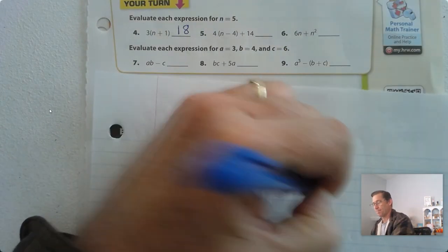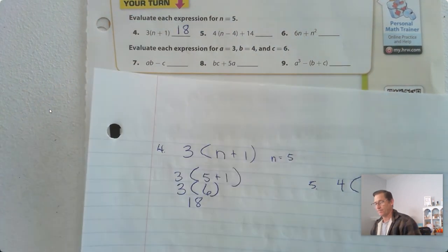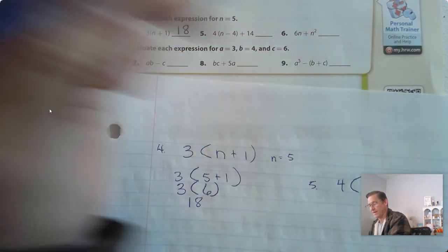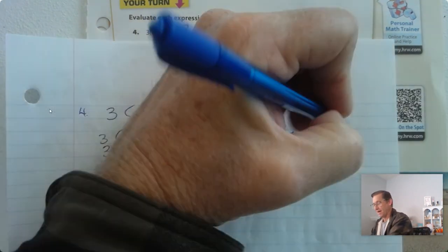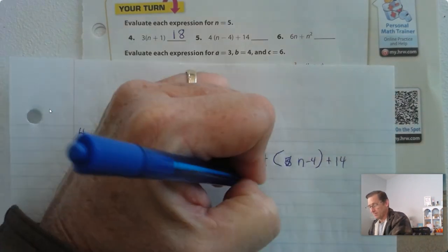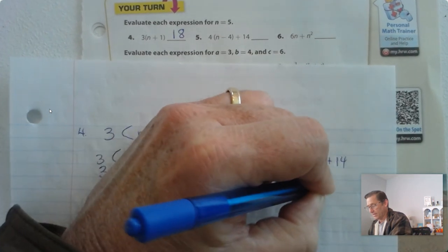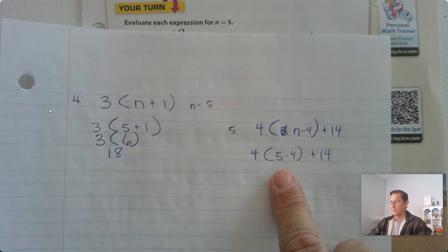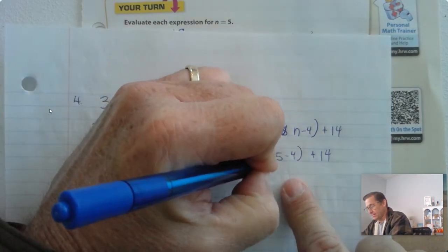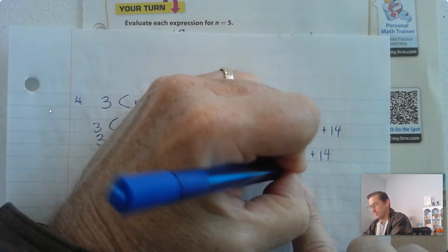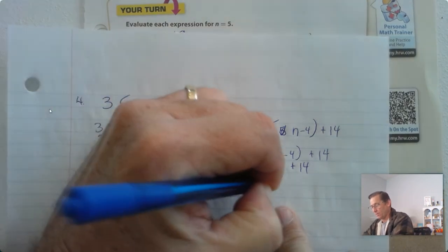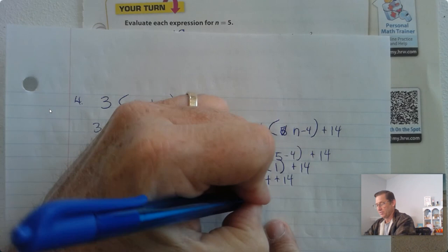Number 5: 4 times the difference of n and 4 plus 14. Substitute 5 for n — all of problems 4 through 6, n is 5. So 4 times the difference of 5 and 4, plus 14. Order of operations: we have multiplication, parentheses, and addition. Parentheses comes first, so 5 minus 4 is 1. Now we have multiplication and addition — multiplication comes first. 4 times 1 is 4, plus 14. Now we only have one operation, so 18.